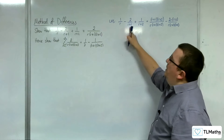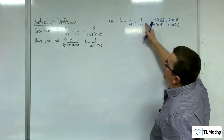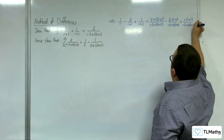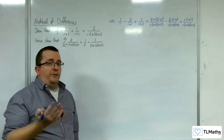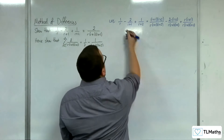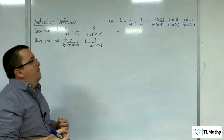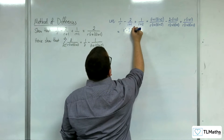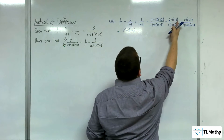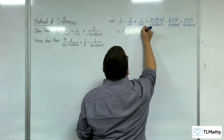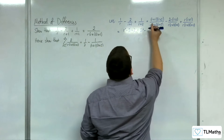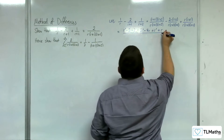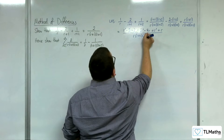The final term has r plus 2 in the denominator, but not the r or the r plus 1. So, we're going to have to multiply that one top and bottom by r(r+1). All three of those fractions now have the same denominator, so we can combine them. We also want to expand those brackets out. The first term gives r squared plus 3r plus 2, then take away 2r squared plus 4r, and plus r squared plus r. That's all over r(r+1)(r+2).